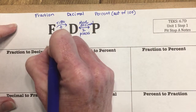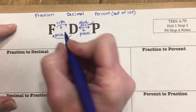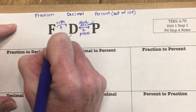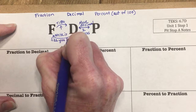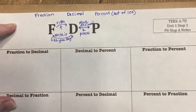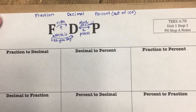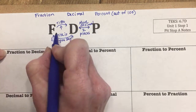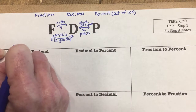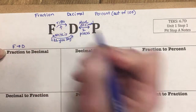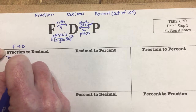When going from a decimal to a fraction, I write the fraction like I say it — meaning I say it with place value. I'll explain more about what that means as we do examples. To go from a fraction to a decimal, I use TIBO: top in, bottom out.